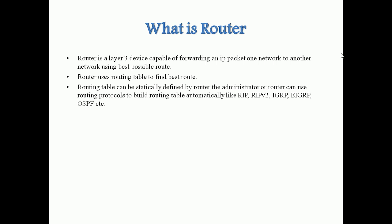How is the routing table built up? The routing table can be statically defined by the router administrator — that is called the static method. Or the router can use routing protocols to build the routing table automatically, such as RIP, RIP version 2, IGRP, EIGRP, and OSPF. The router forwards an IP packet from one network to another using the best route selected from the routing table.